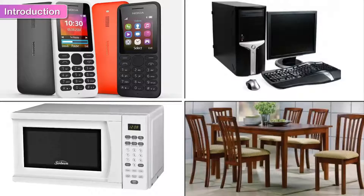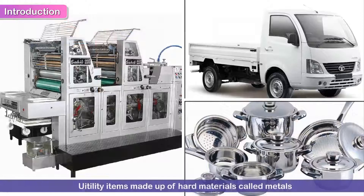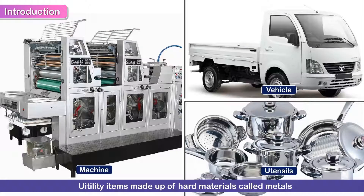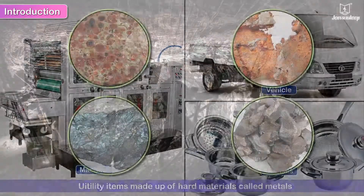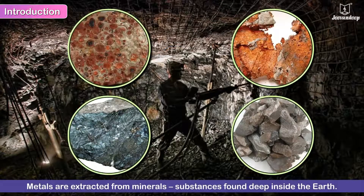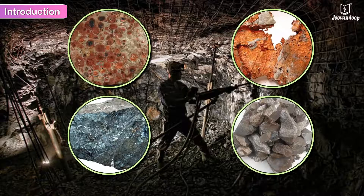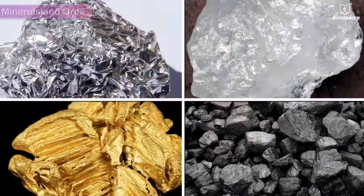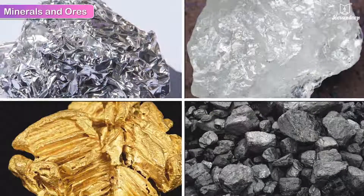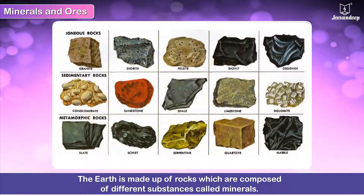The things that we use in our daily life are made up of different materials. Machines, vehicles, kitchen utensils, and many other utility items are made up of a certain hard material called metals. Metals are extracted from minerals — substances found deep inside the earth. In this chapter, we will study minerals as an important natural resource.